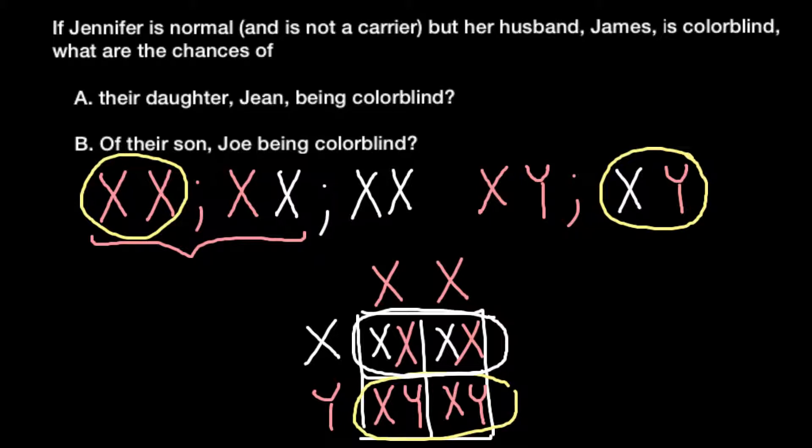So we can answer this question as chances is 0%. And question B: of their son Joe being colorblind.